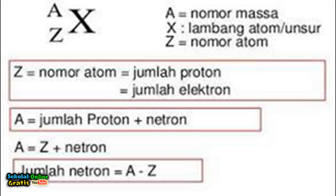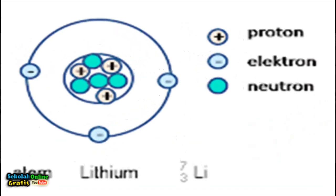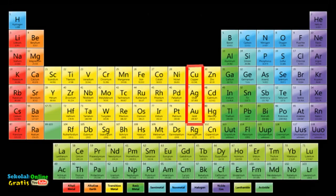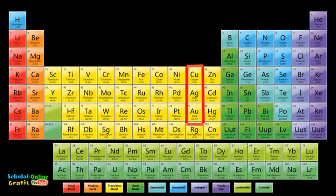When writing the element symbol the atomic number is written in a subscript down to the left of the element symbol. The mass number is written in superscript ascending to the left of the element symbol. For example the element lithium has an atomic number of three and a mass number of seven so the symbol for the element is written as follows.